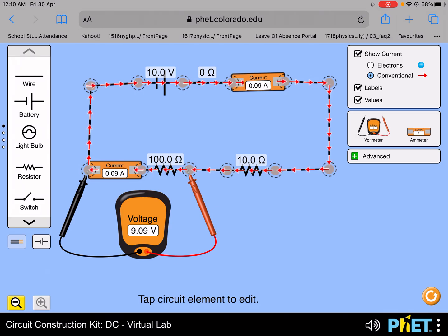In other words, the PD across each of these resistors is proportional to their respective resistance.